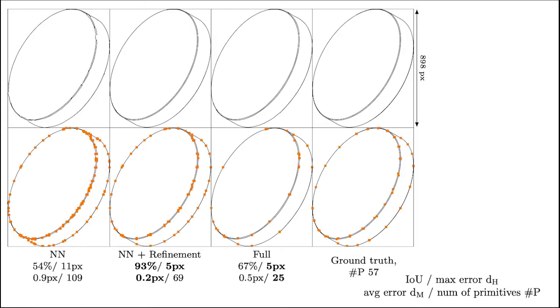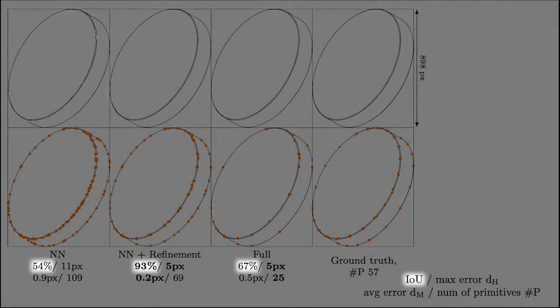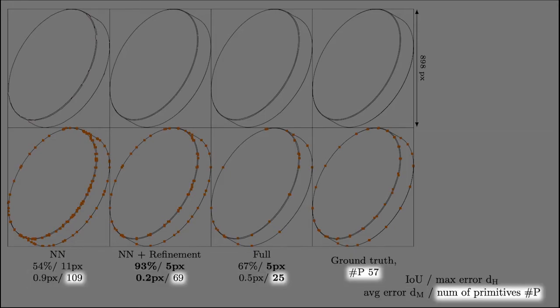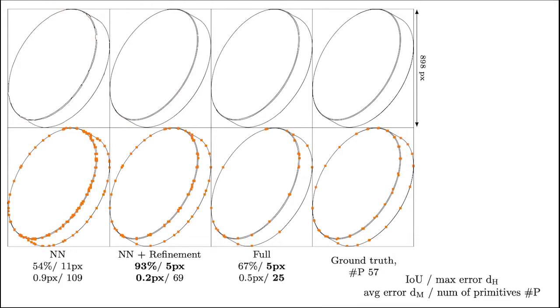Let's look at the vectorization result after different steps of our algorithm on this clean example. We measure the quality of the results using intersection over union, the largest and average distance between the skeletons of the result and the ground truth, and the number of primitives. So the network estimates the positioning and the size of the primitives. The refinement step aligns the primitives to the input raster improving the accuracy of the result, and the final merging step reduces the number of primitives with a slight loss in accuracy.